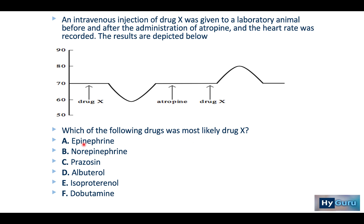Epinephrine acts on beta receptors and would not cause a decrease in heart rate. Norepinephrine is the correct answer — it gives you alpha-1 agonism, vasoconstriction, and then reflexive bradycardia. Prazosin is an alpha-1 antagonist, which causes reflex tachycardia, not the initial bradycardia. Albuterol, isoproterenol, and dobutamine all act more on beta receptors. This question is about knowing the baroreceptor reflex and how atropine can blunt its efferent limb.